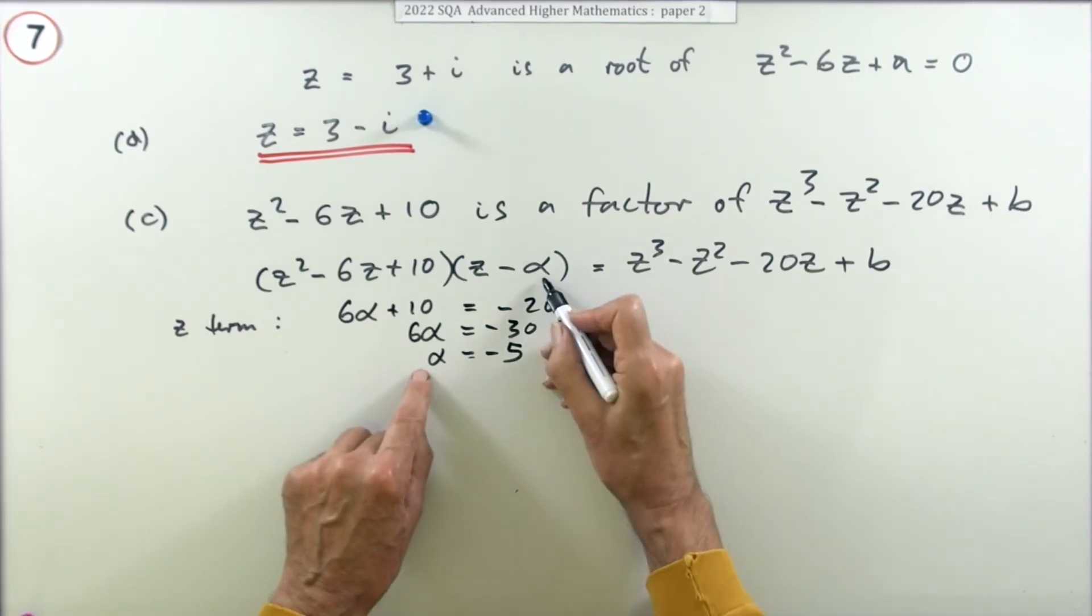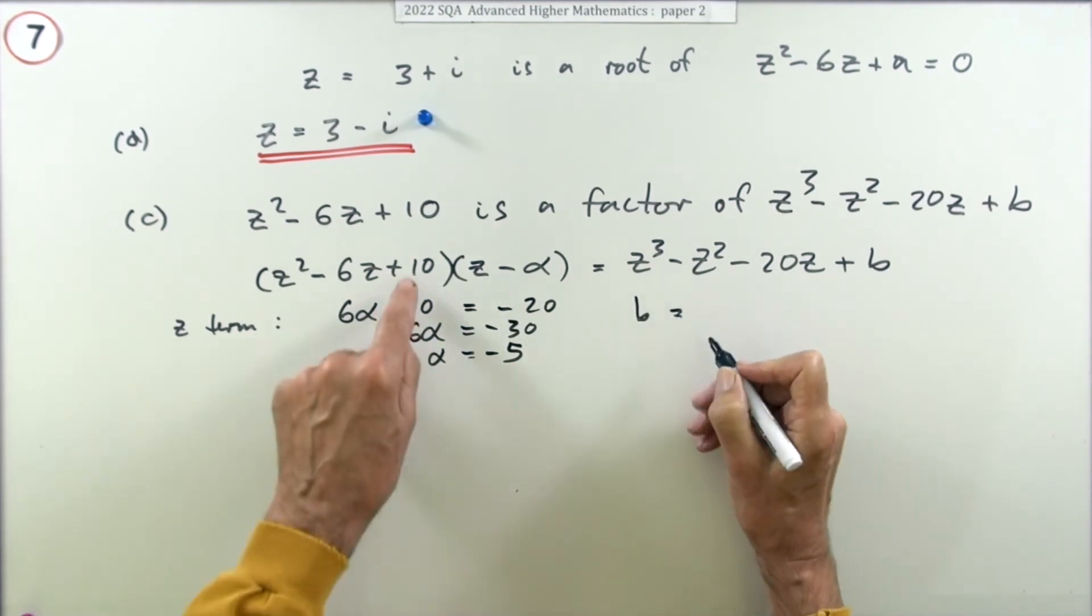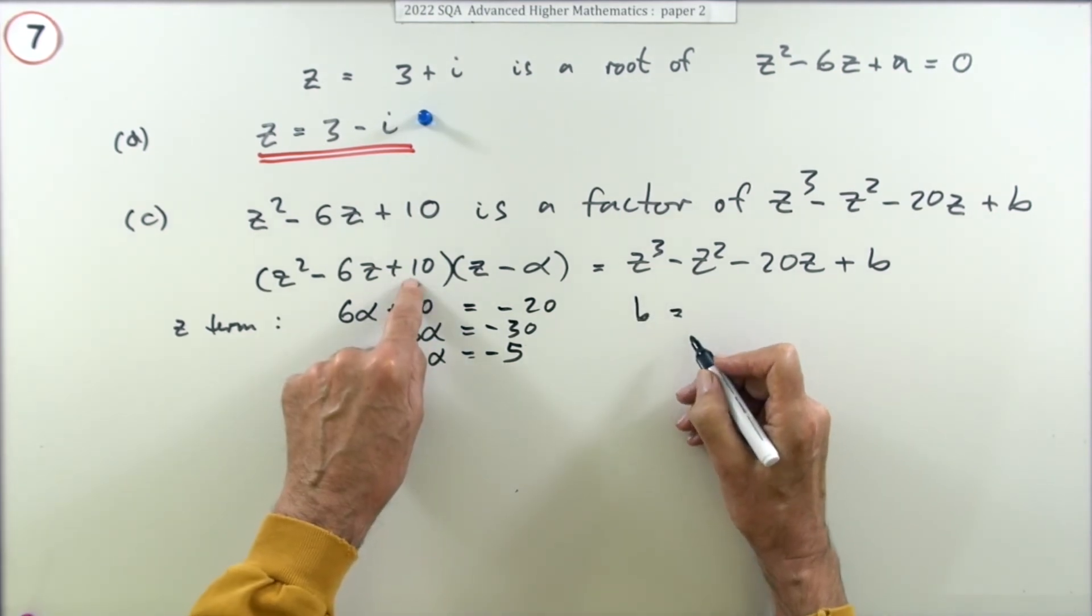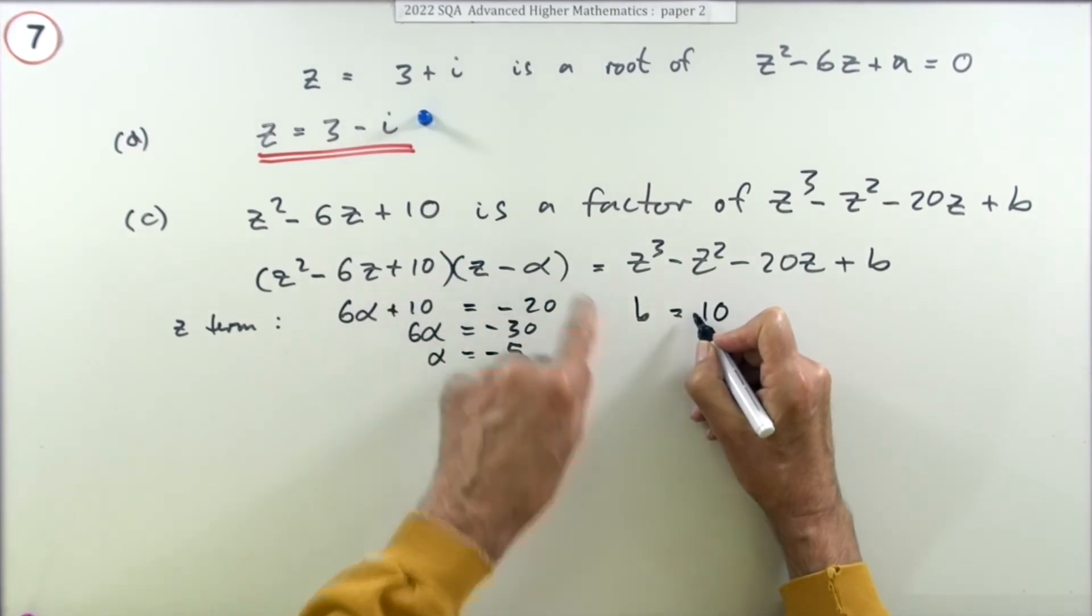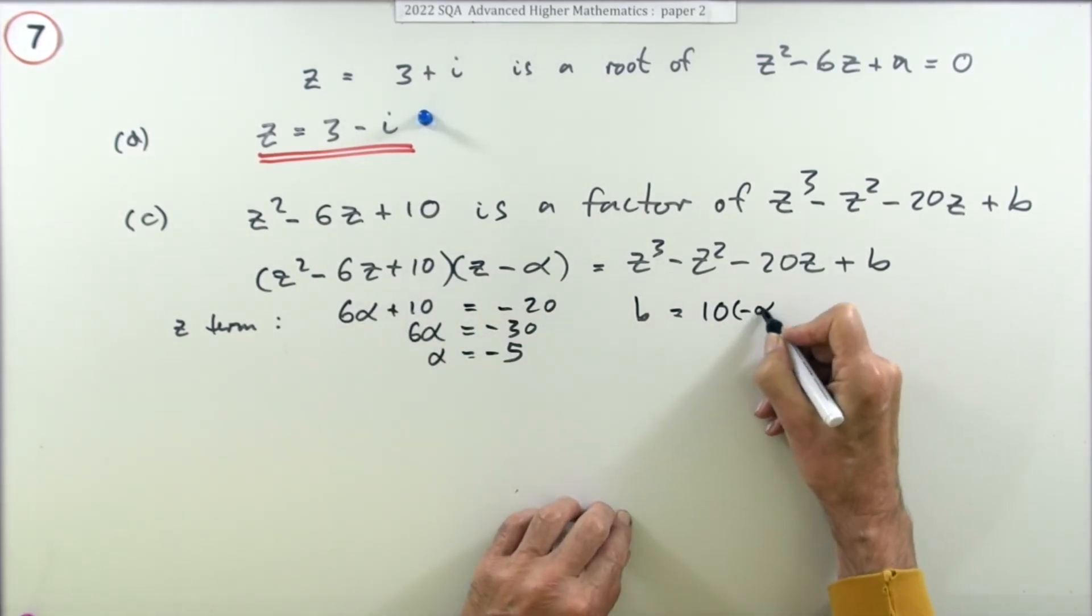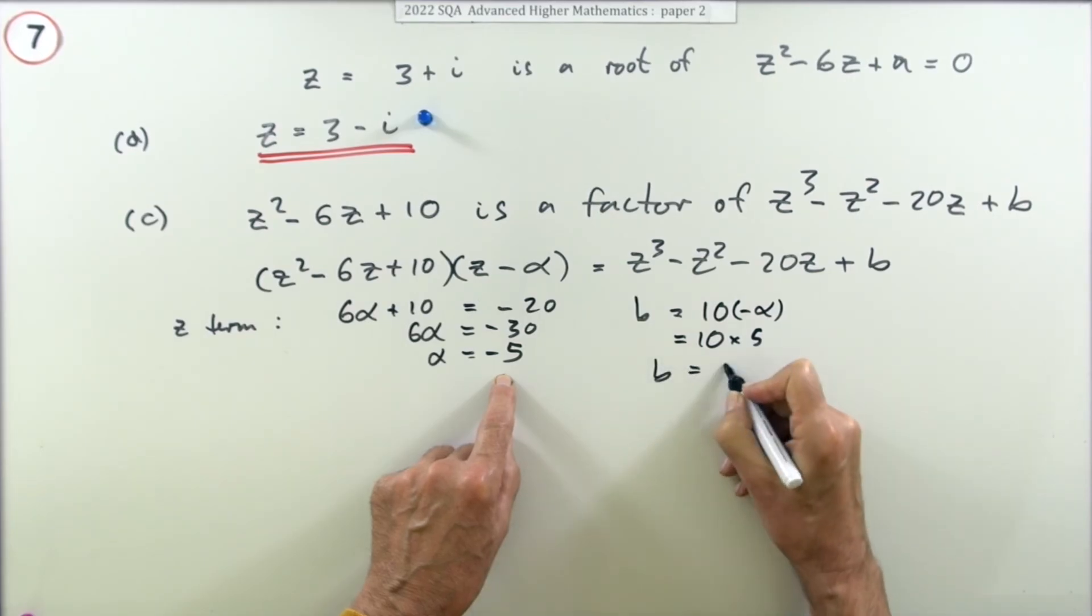Now I know alpha, I can reconstruct b because b should be the product of the constant terms. b should be 10 times negative alpha, so that should be 10 times, and the negative of negative 5 is 5, so b should be 50.